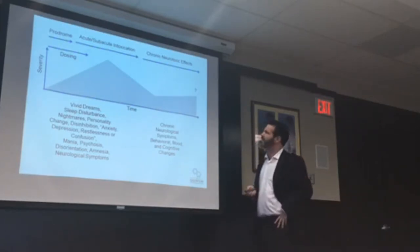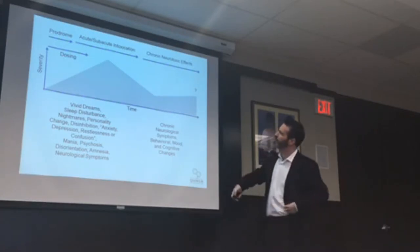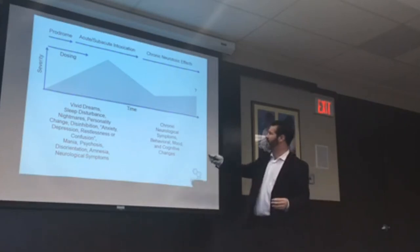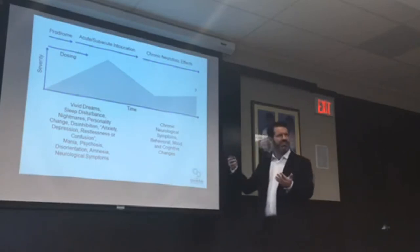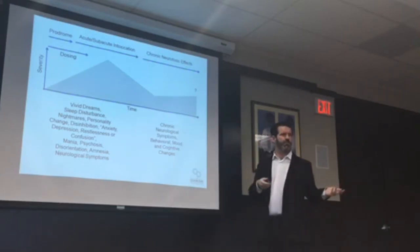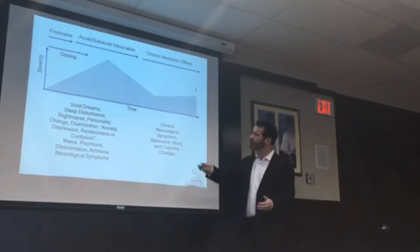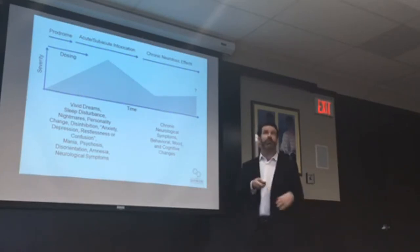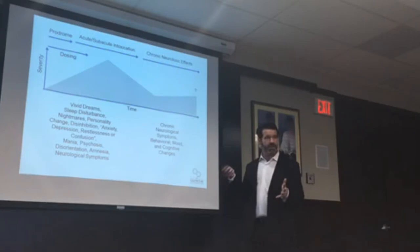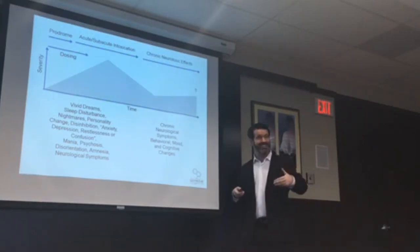If you imagine the severity of symptoms on the vertical axis and time on this axis: you have the prodrome where you begin to notice symptoms, which you may attribute to your environment or a pre-existing condition. Over time, the severity will be such that you either seek medical attention or you realize it is the drug and stop taking it. Something will happen to stop the exposure to the toxicant, at which point hopefully the symptoms will decline a little bit.